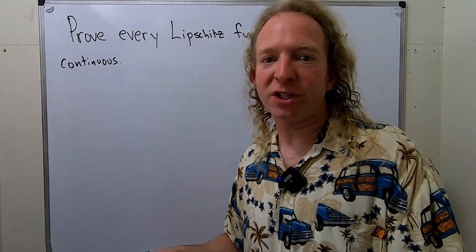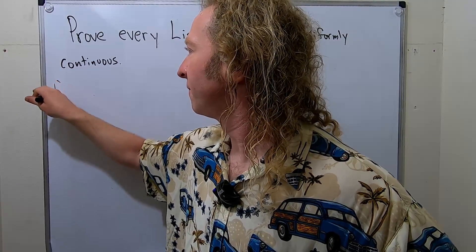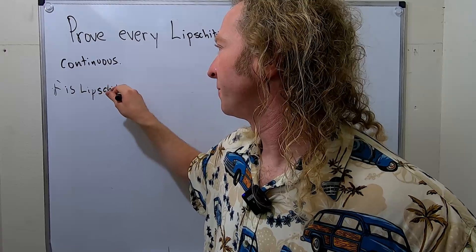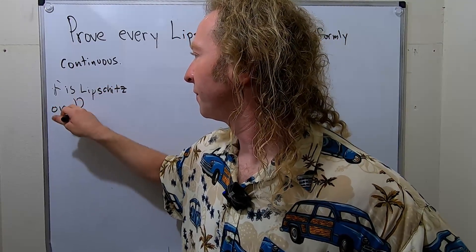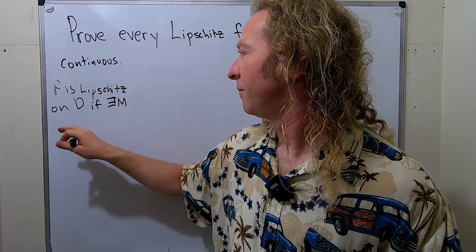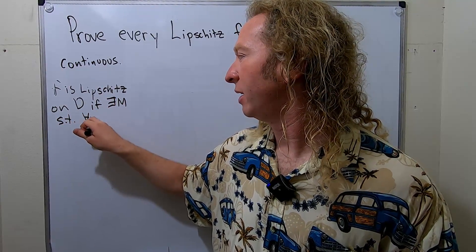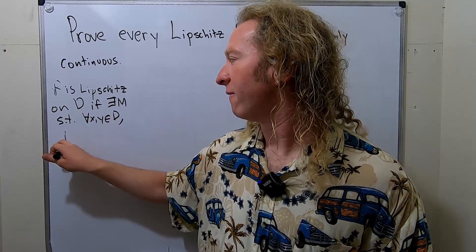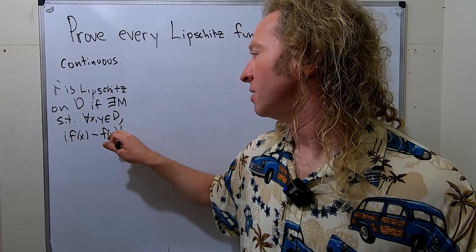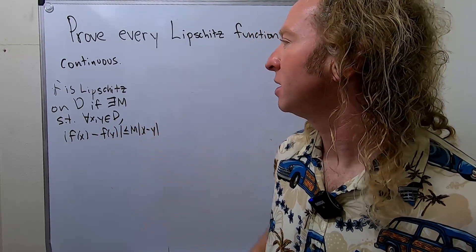We say a function is Lipschitz, or has the Lipschitz condition, if the following holds. F is Lipschitz on D if there exists a constant M such that for all x, y in D, we have |f(x) - f(y)|